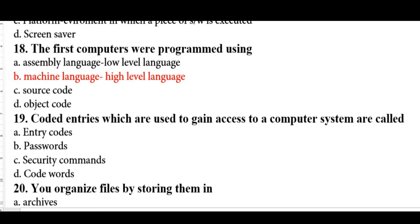Source code is a list of human-readable instructions that a programmer writes. Object code is a set of instruction code that is understood by a computer at the lowest software level — it is the computer-understandable code.